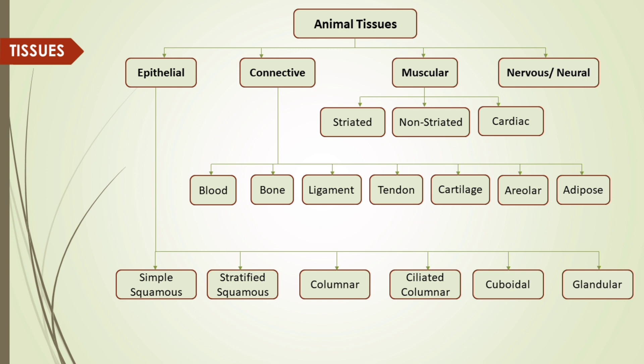Animal tissues flow chart: animal tissues are mainly 4 types — epithelial tissue, connective tissue, muscular tissue, and nervous tissue. Epithelial tissues are 6 types: simple squamous, stratified squamous, columnar, ciliated columnar, cuboidal and glandular. Connective tissues are: blood, bone, ligament, tendon, cartilage, areolar and adipose. Muscular tissues are: striated, non-striated and cardiac.